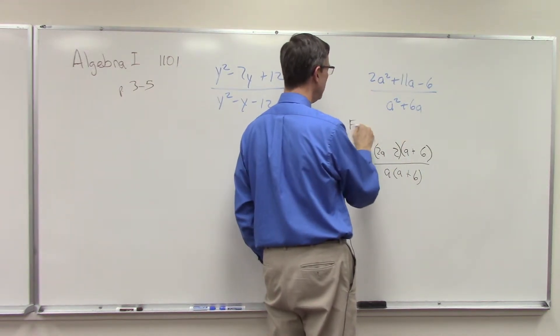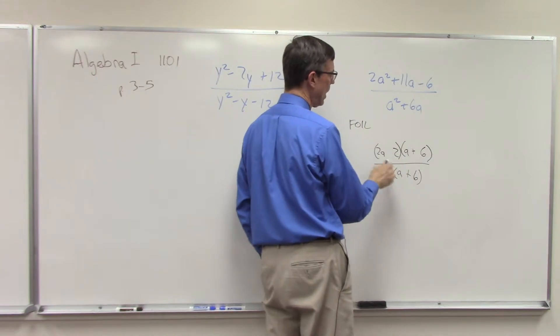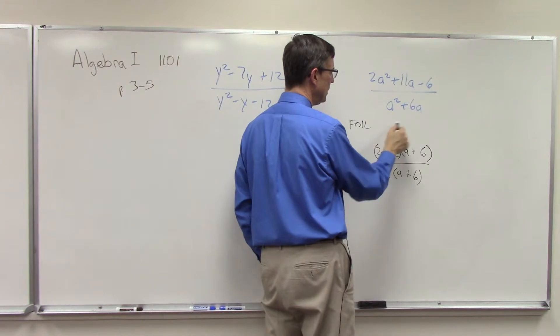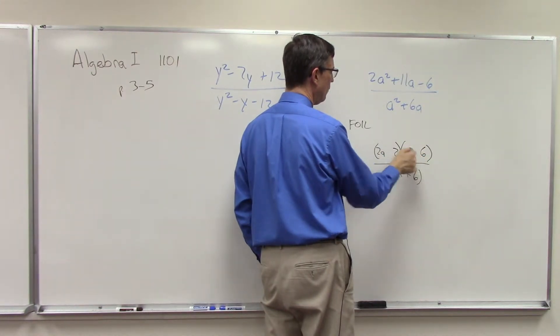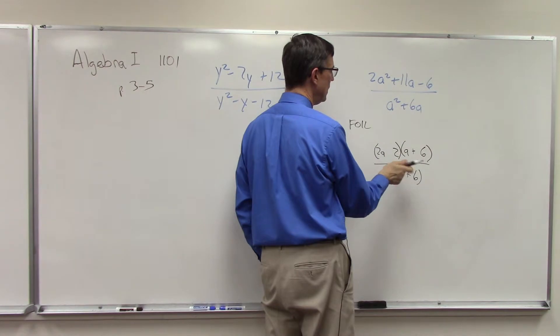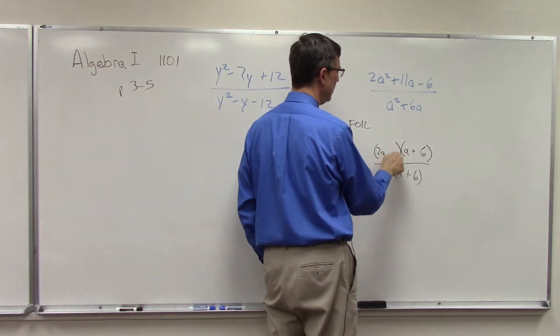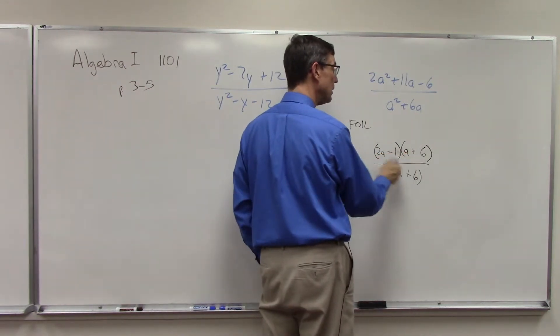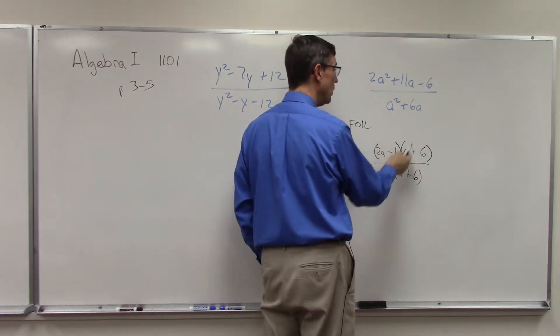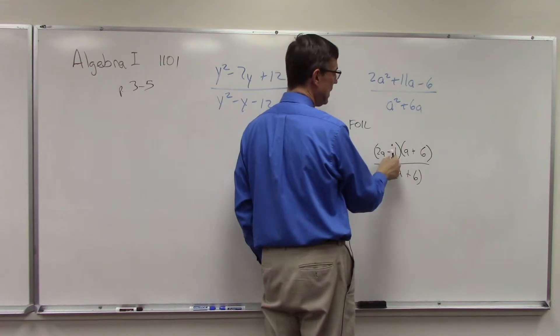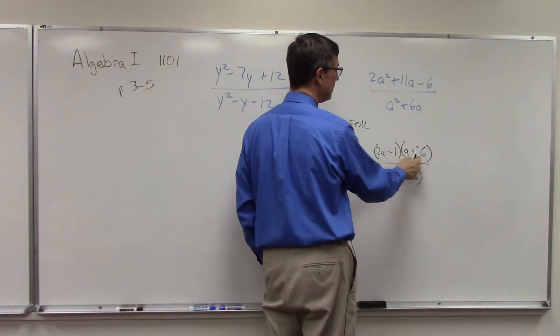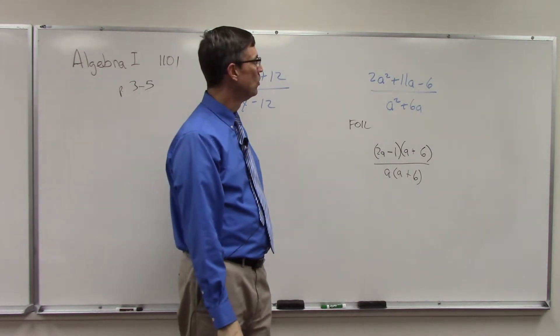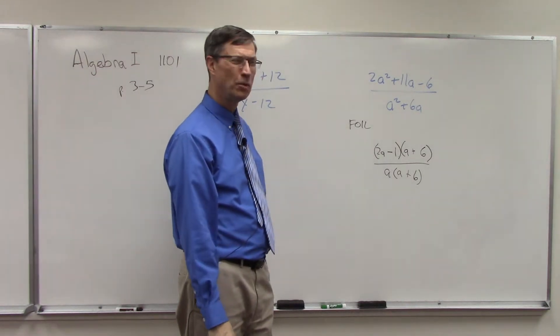So using the FOIL method—remember, first, outer, inner, last—first is 2a squared, outer is now positive 12a, and then I want one here, because I want it to be negative 1, so that positive 12 minus 1 will give me positive 11, and then negative 1 times positive 6 is negative 6.